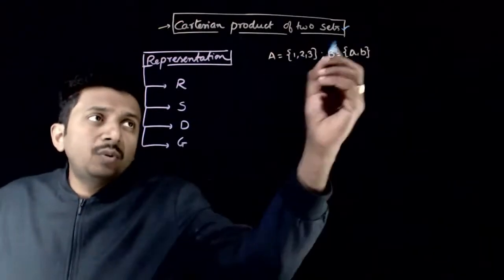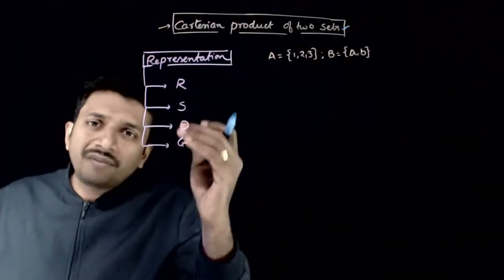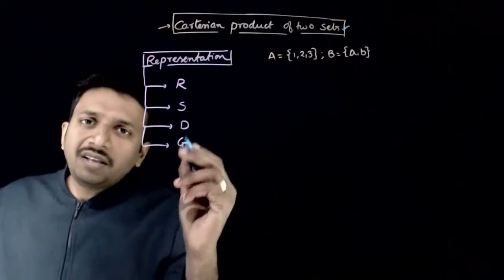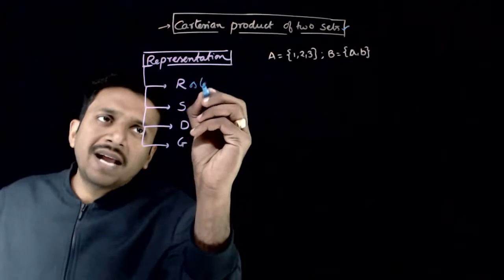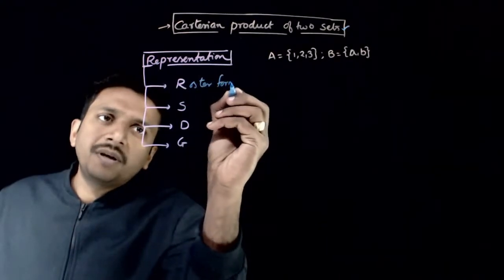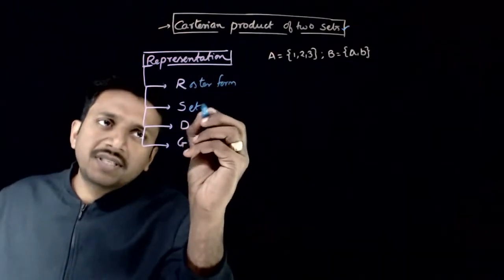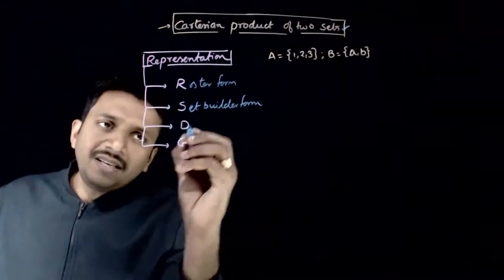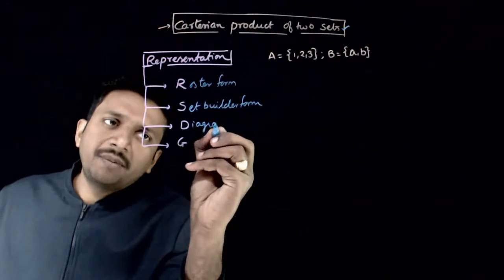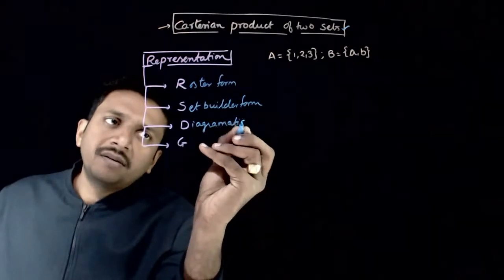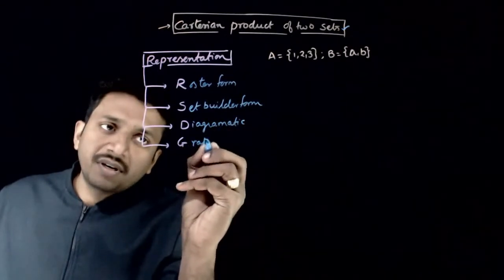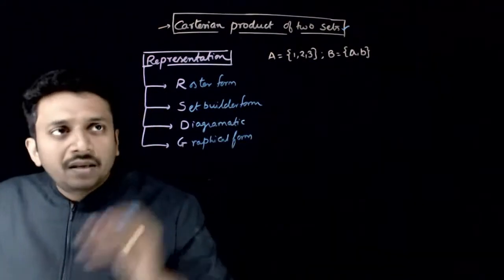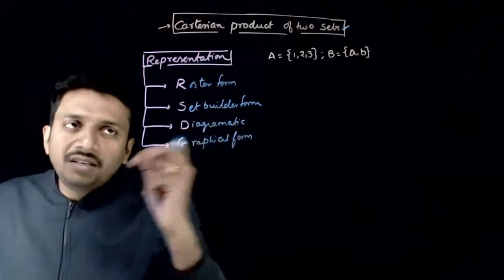So, the Cartesian product of two sets can be represented in four different ways. First, R, S, D, G. R stands for Roaster Form, S stands for Set Builder Form, D stands for Diagrammatic Form and G stands for Graphical Form. R, S, D, G.